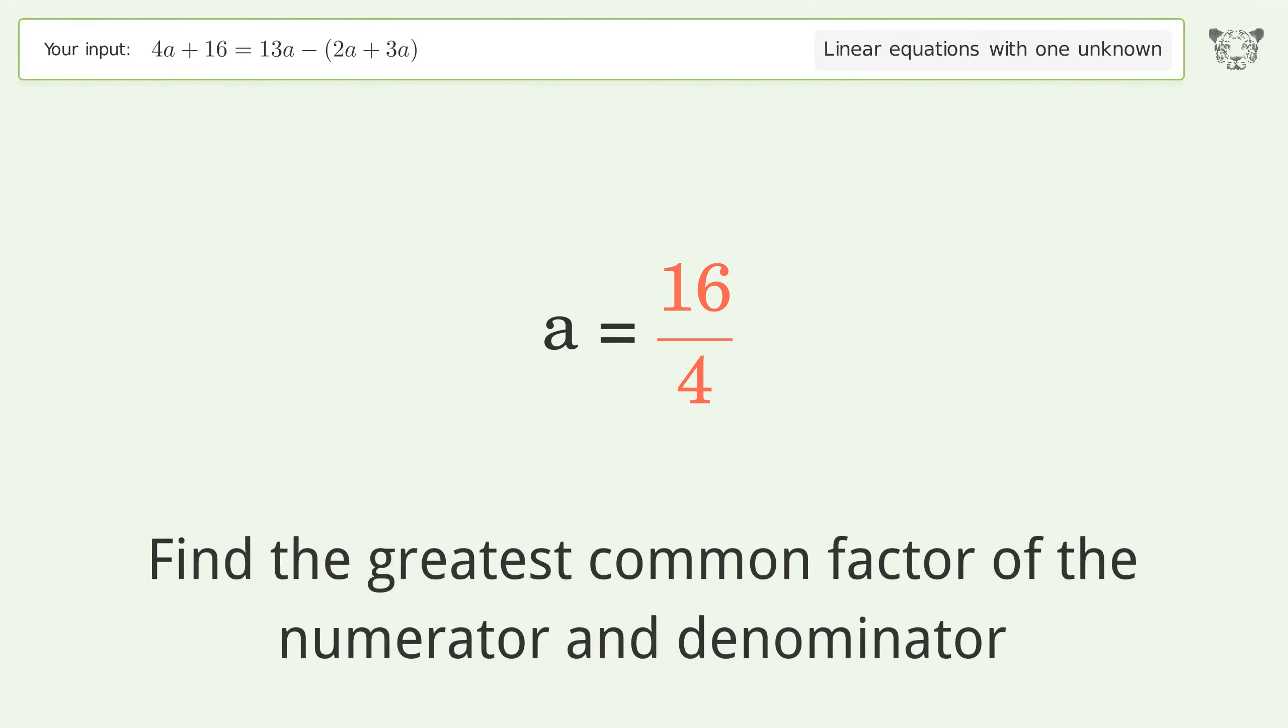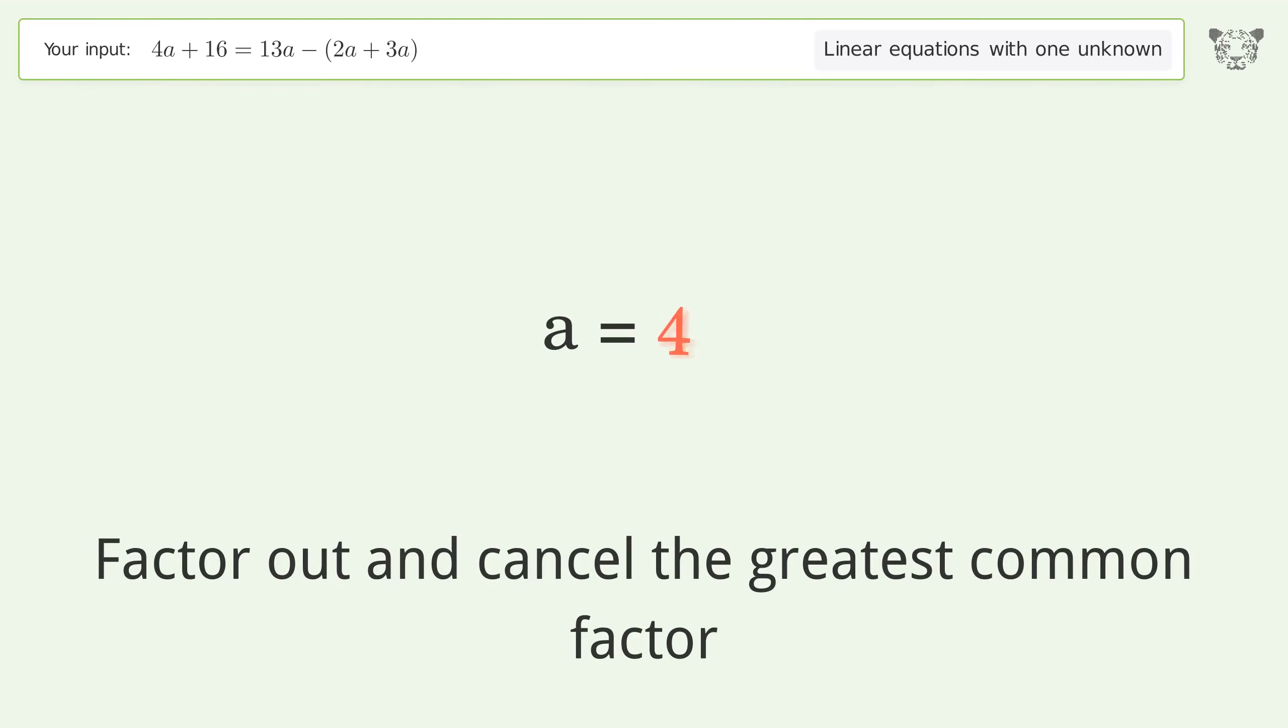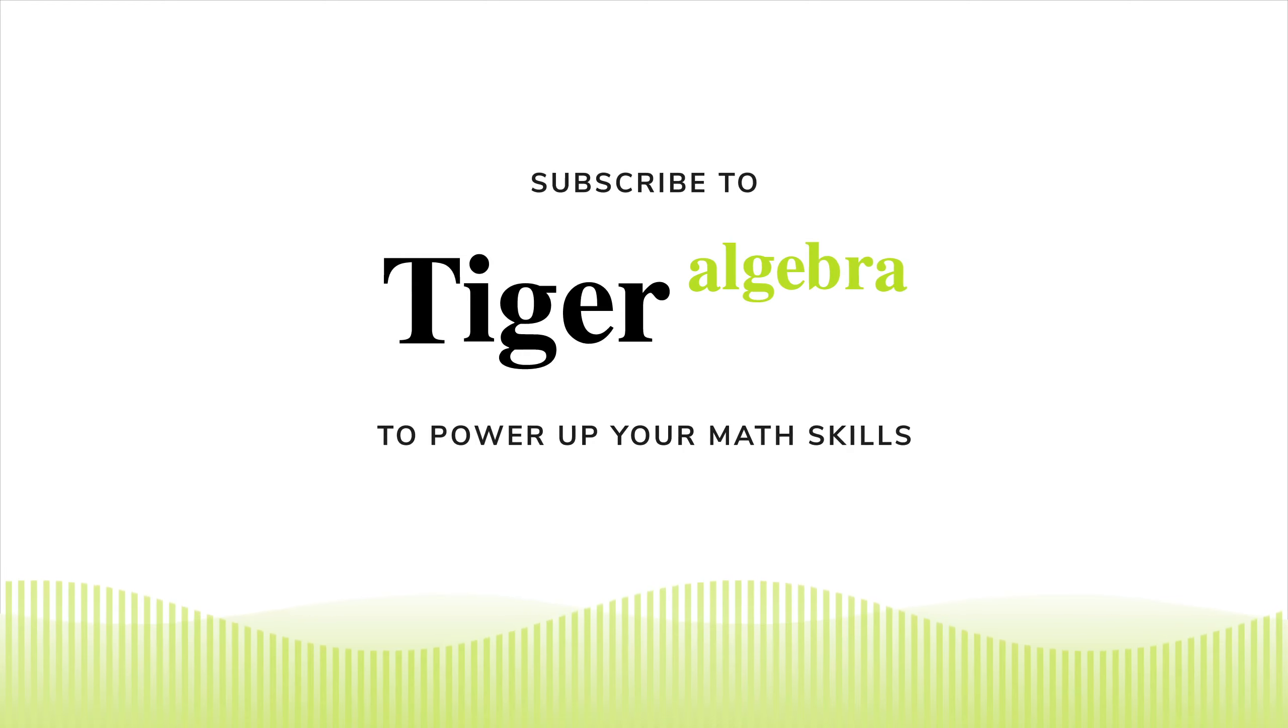Find the greatest common factor of the numerator and denominator. Factor out and cancel the greatest common factor. And so the final result is A equals 4.